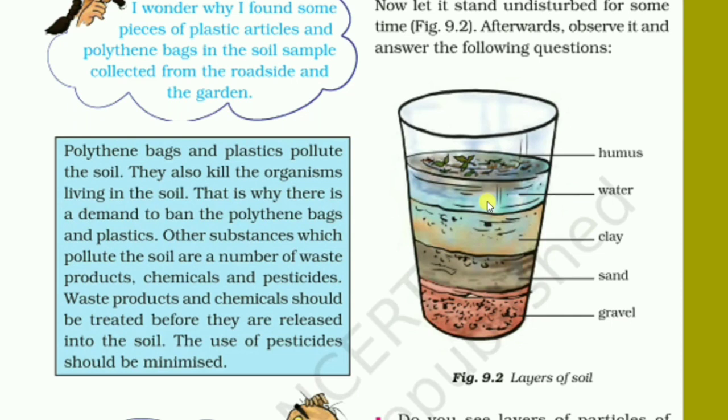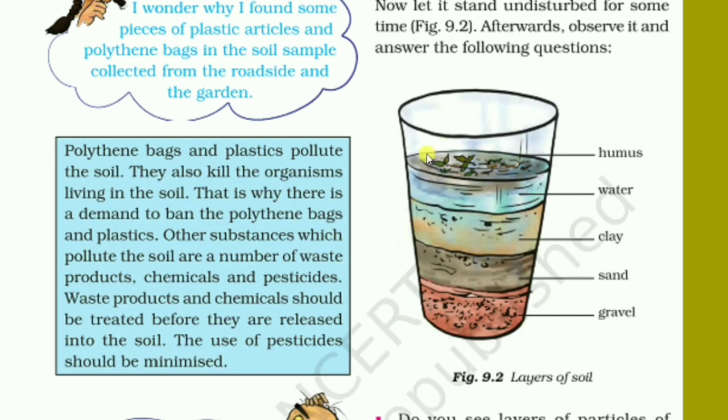Stir it very well and let it undisturbed for few minutes. After some time, if you look through the sideways of the glass, you can see the different layers are arranged automatically. This is happening because the soil you have broken into powder contains different sizes. If the particle size is larger, it will settle down at the bottom of the glass, and which is lighter, the very minute soil, will float on the surface of the water.